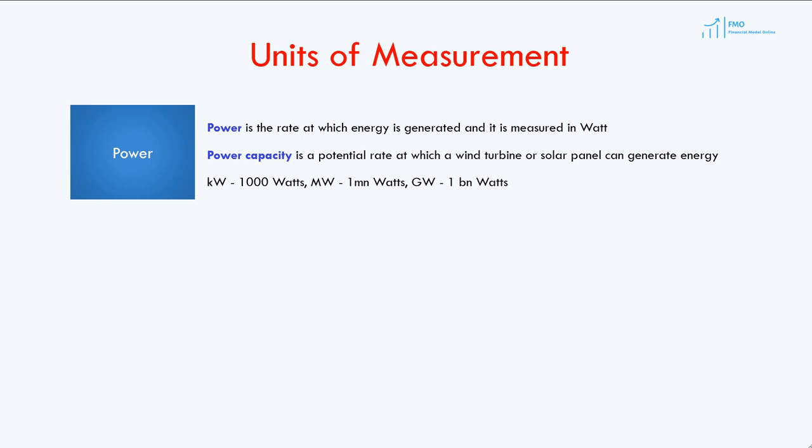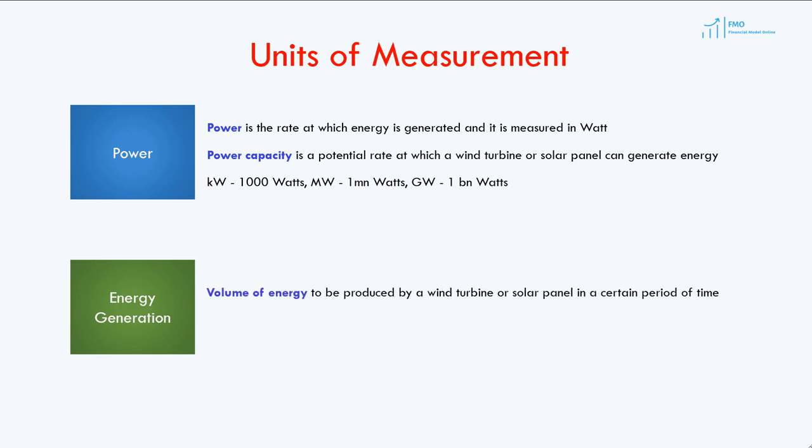Energy production on a country level is typically measured in gigawatts, which is one billion watts. Energy is the volume of electricity produced by a wind turbine or solar panel in a certain period. Note that energy can also take other forms, and electricity is just one of them. We measure electricity generation in kilowatt hours, megawatt hours, or gigawatt hours.